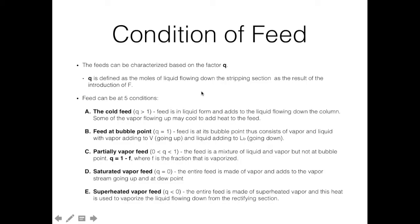This video is about the feed lines of a distillation column and the condition of the feed or flow that goes into the distillation column. We can characterize the feed based on the factor Q. Q is defined as the moles of liquid that flows down the stripping section because of the introduction of F, or because of the introduction of the feed into the distillation column.